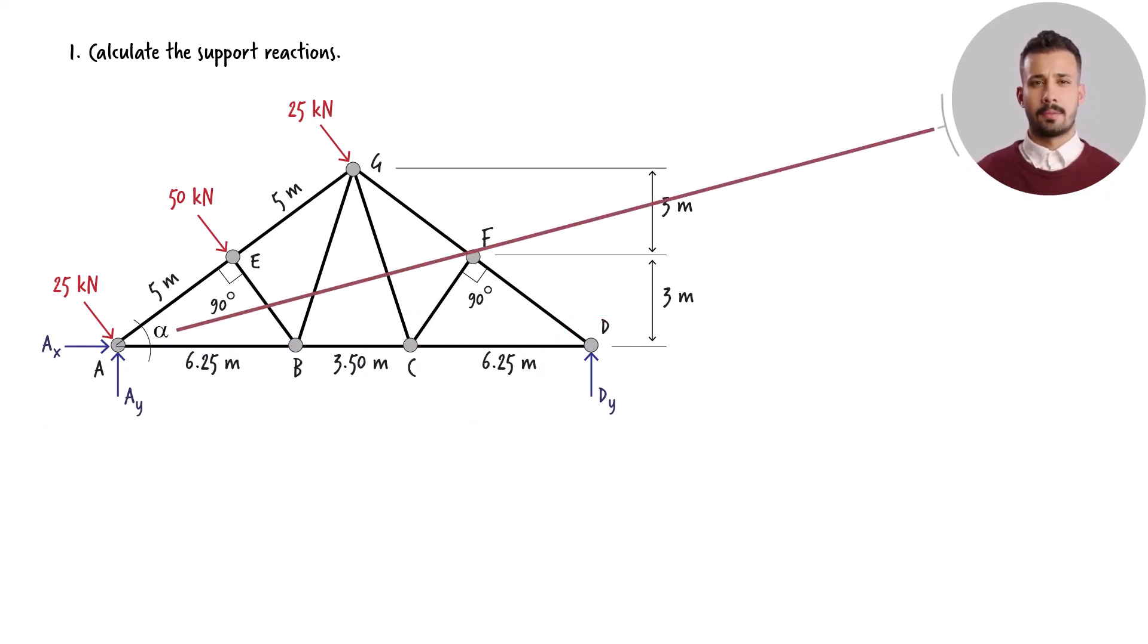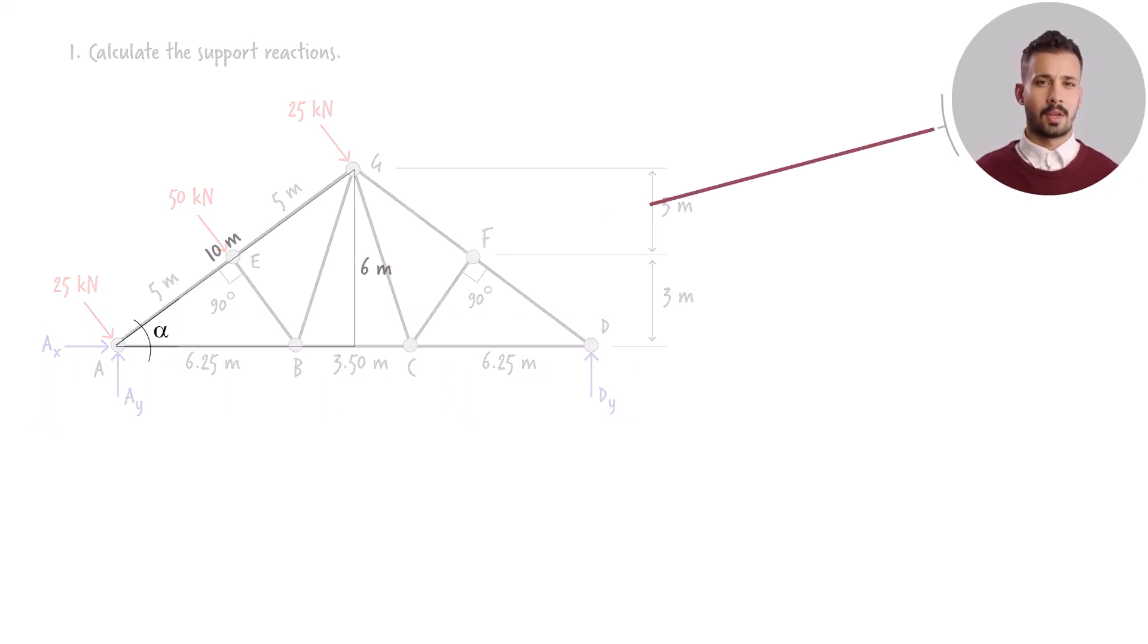We can calculate this angle using this triangle. The sine of alpha equals 6 over 10, therefore, alpha equals 36.87 degrees.